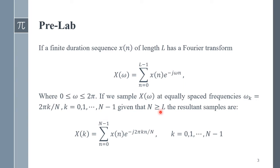and N is greater than or equal to the length of the finite sequence x(n), then the resultant samples are given by the expression: X(k) equals summation from n equals zero till N minus one of x(n) multiplied by the complex exponential e raised to power minus j two pi k n divided by capital N, where k varies from zero till N minus one.